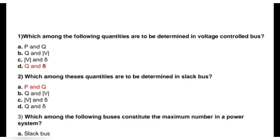In the load bus, active and reactive power are specified, and voltage magnitude and load angle are not specified. In the generator bus, active power and voltage magnitude are specified, and reactive power and load angle are not specified. In the slack bus, voltage and load angle are specified.